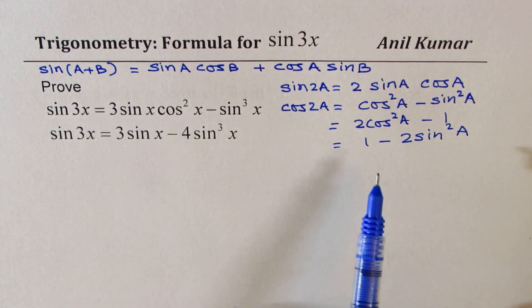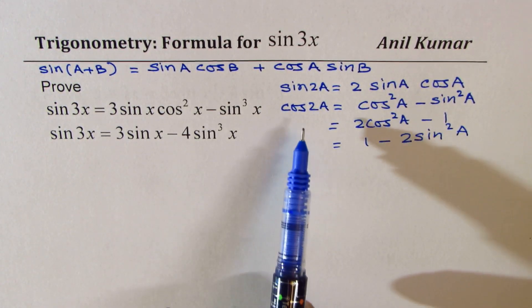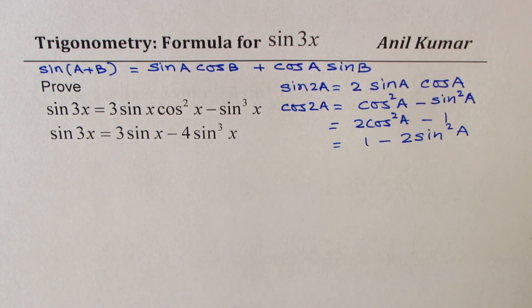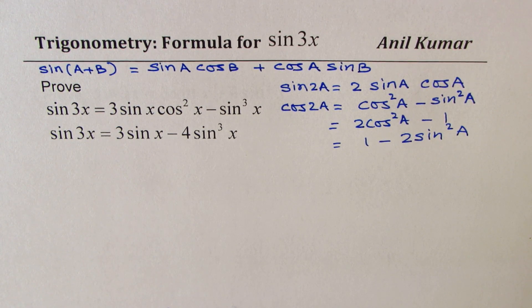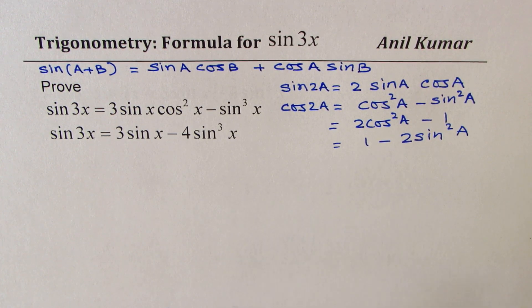As you can see, cos 2A can be written in three different ways. That really means that we could actually get three different formulas for sine 3x. So with that, we'll start our proof.